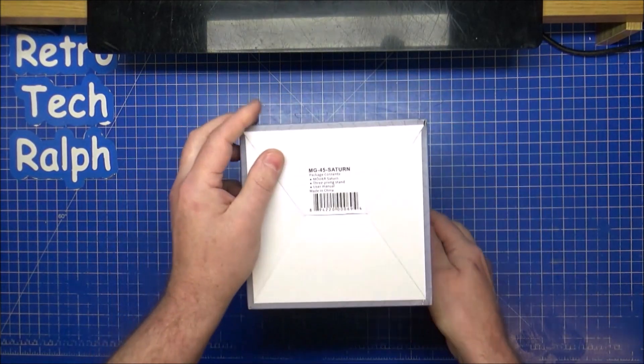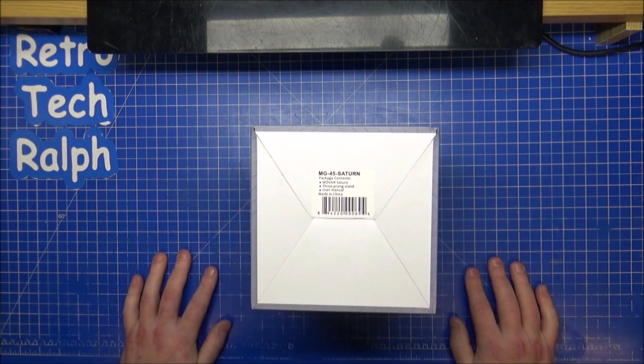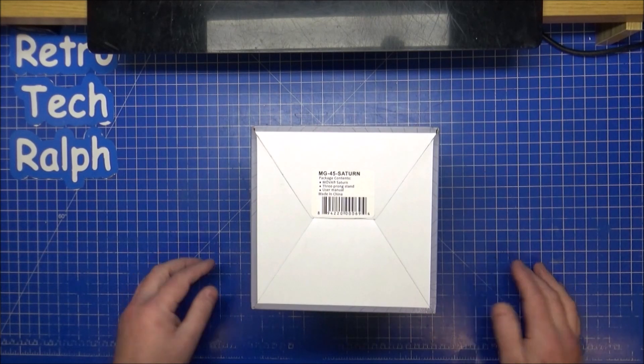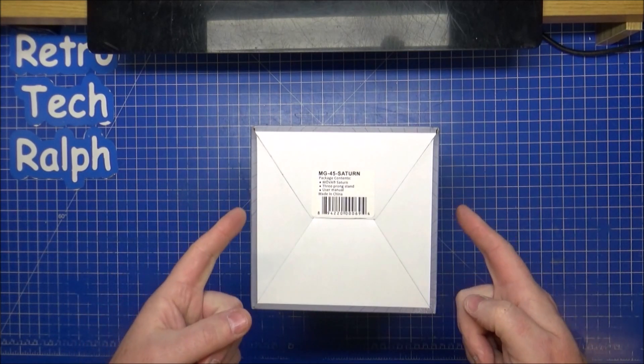And on the bottom, MG45 Saturn, containing the MOVA Saturn three-pronged stand and a user manual made in China.